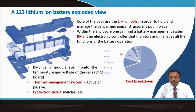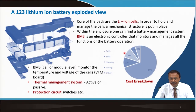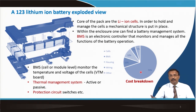If you do a cost breakdown, you see the cell, then BMS, housing, wiring, and other components. About 70 percent of the cost is the cell and the allied materials being used.